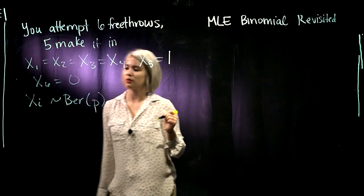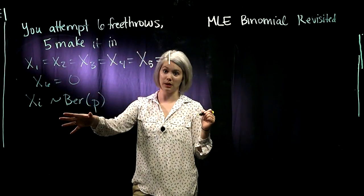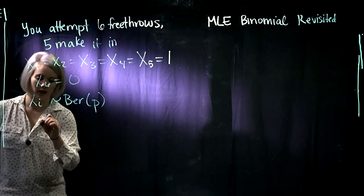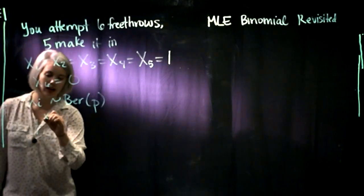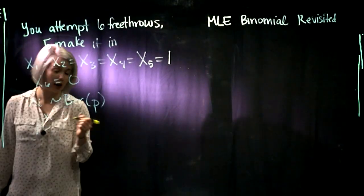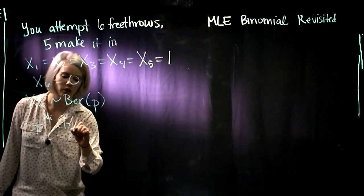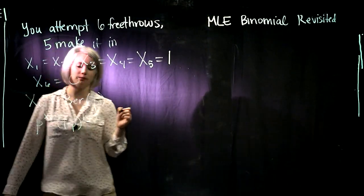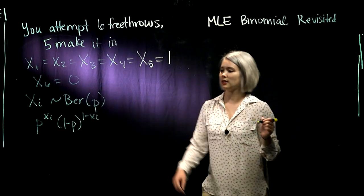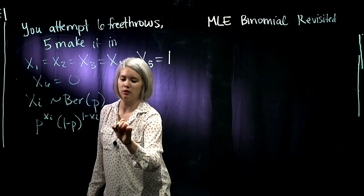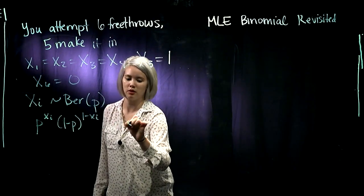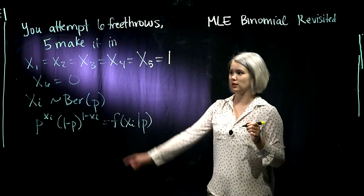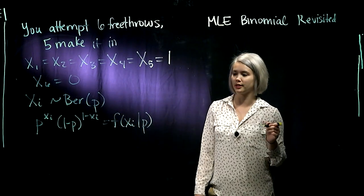We need the PMF of that Bernoulli distribution. We know that that's just p to the x, whatever x we're talking about, times 1 minus p to the 1 minus x. This is our PMF for each one of these x's, x1 through x6, so they're identically distributed — they all have this PMF.